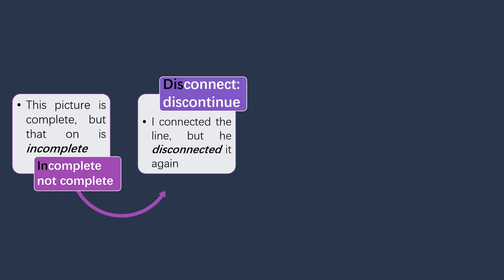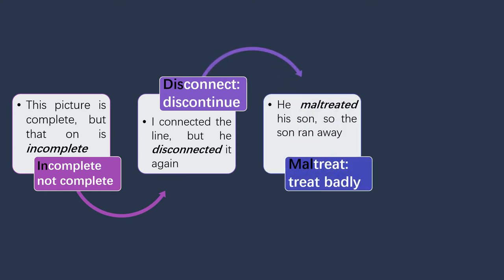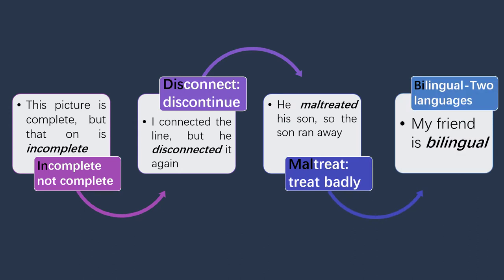Another example: 'He maltreated his son, so the son ran away.' Here we added the prefix 'mal' to 'treat' and it became 'maltreat,' meaning to treat someone badly. And lastly, 'My friend is bilingual.' Here we added 'bi' as a prefix to 'lingual,' giving the meaning of two — we are saying the friend knows two languages.